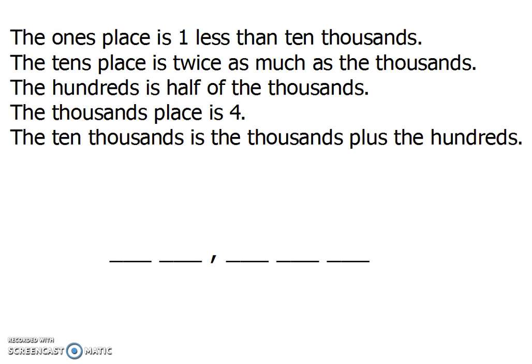So the first thing I'm looking for is a number I can start with. So the ones place is one less than ten thousands. I don't know ten thousands, so that doesn't help me. Tens is twice as much as thousands. I don't know thousands yet, so that doesn't help me. The hundreds is half of the thousands. Still don't know the thousands. Thousands place is four. Ooh.